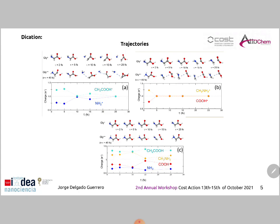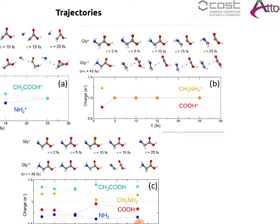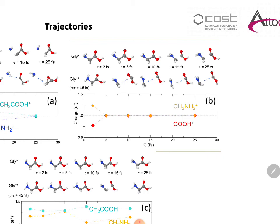Finally, we move to the case of the dication. What we have performed is a qualitative study of three selected cationic trajectories: one that shows CN fragmentation, another one that shows CC fragmentation, and one which doesn't show fragmentation at all. If we consider the particular case of the trajectory that shows CC fragmentation, we observe at the top the pump-probe scheme and the nuclear configurations, and below the distribution of the charge for the different fragments after 45 femtoseconds of the cationic propagation, with the x-axis being the delay between the pump and probe.